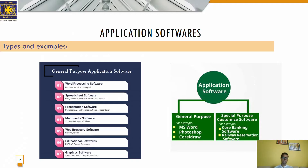Each software program is developed to assist users with a particular process related to productivity, efficiency, and communication. The basic functions of application software are managing data, manipulating information, calculating figures, constructing visuals, coordinating resources, writing reports and creating spreadsheets, and manipulating images. Those are some functions that we serve using application software.